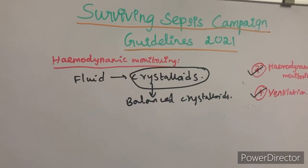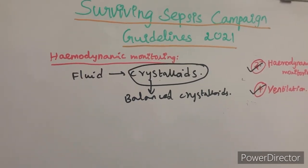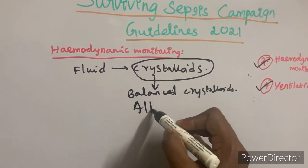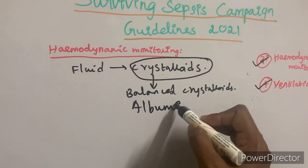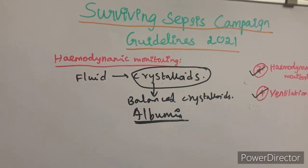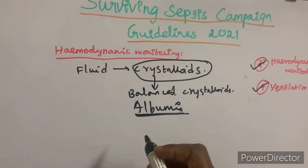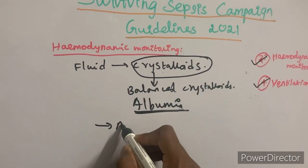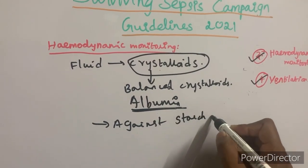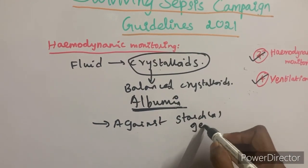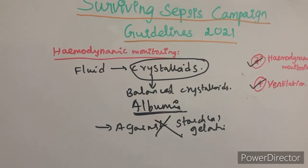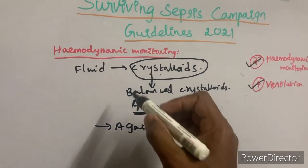If large amounts of crystalloids are being used to achieve a MAP of more than 65 mmHg, albumin can be considered as a second-line fluid strategy. The guidelines recommend against the use of starch or gelatin for hemodynamic maintenance.